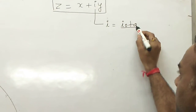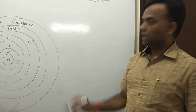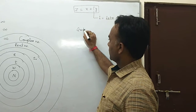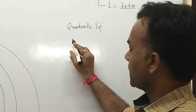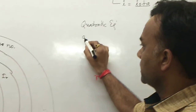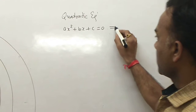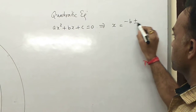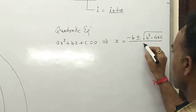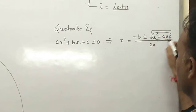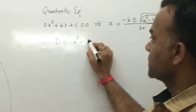In the quadratic equation, the general form is ax² + bx + c = 0. We use the formula: x = (−b ± √(b² − 4ac)) / 2a. The value inside — b² − 4ac — is called the discriminant, denoted by D.